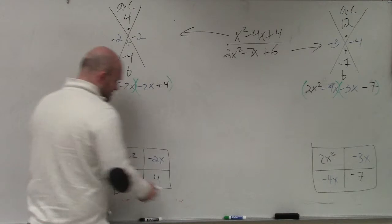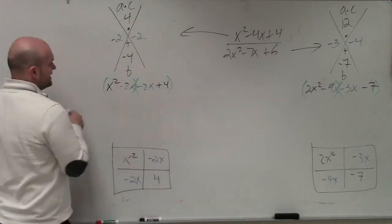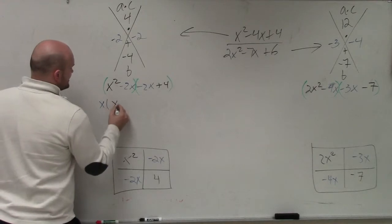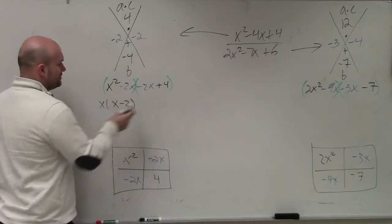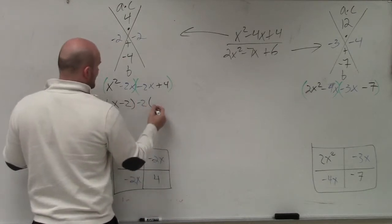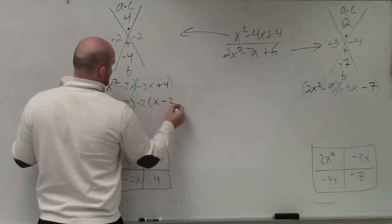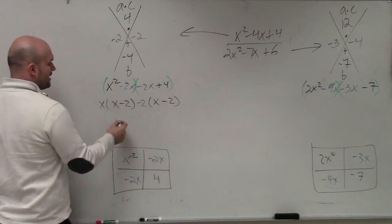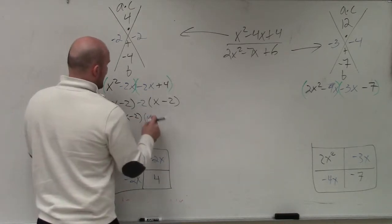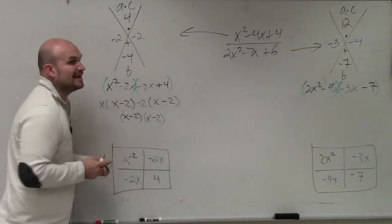Then basically all we do is factor out the GCF, the term that they have in common. Here, my two terms have in common an x. So when I factor out an x, I am left with an x minus 2. Here, they have in common a negative 2. When I factor out a negative 2, I'm left with an x minus 2. So therefore, I factor them out as x minus 2 times x minus 2, which is really x minus 2 squared, right?